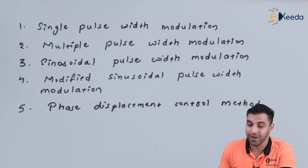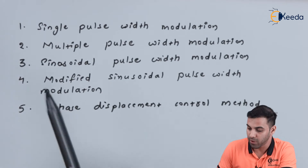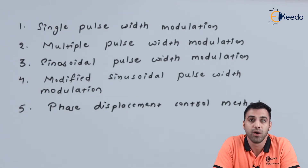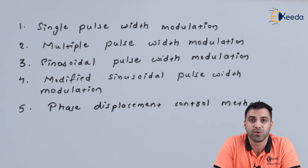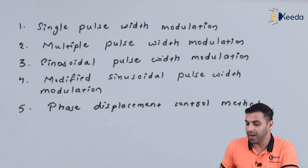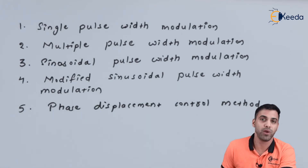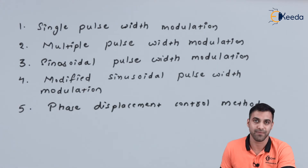There are 5 control techniques through which we can control the output voltage of an inverter. Number 1 is single pulse width modulation — we will be varying the width of a pulse to control the output voltage, which we will be discussing in the upcoming lectures. Number 2 is multiple pulse width modulation, in which we will be using multiple pulses and the width changes.